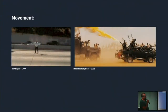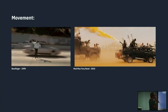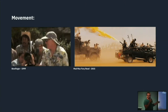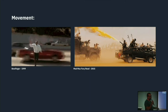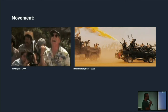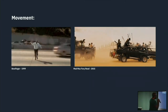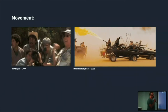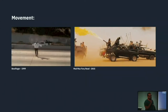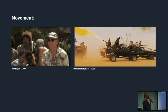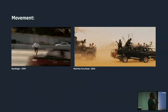Movement. Our eyes obviously get drawn to movement. Cars could be moving back and forth, but if there's one character not moving in the same way, we're drawn to that character. And anything moving faster or slower than everything else — we're drawn to it.